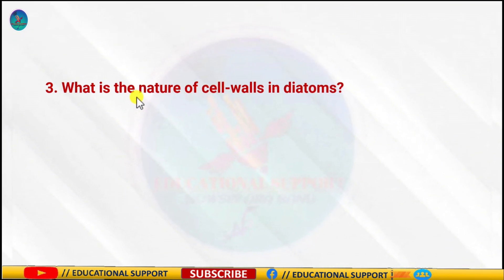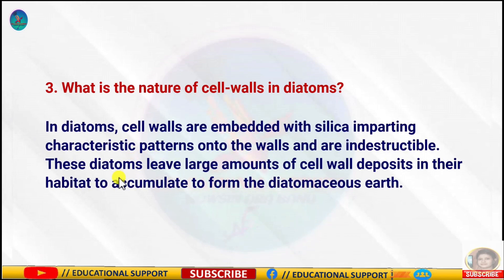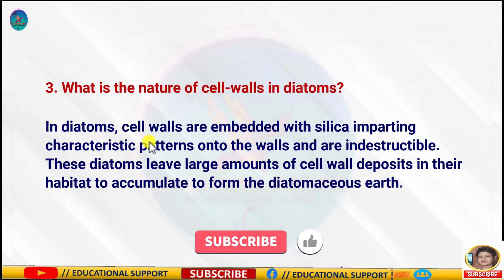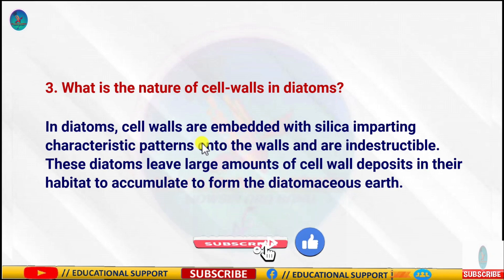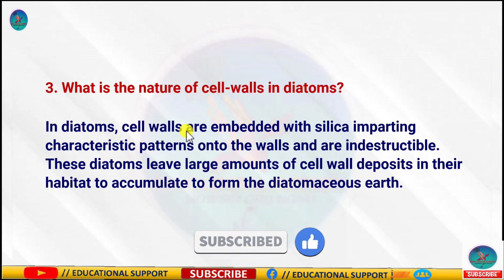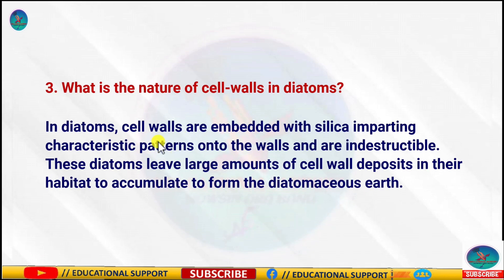Question number three: What is the nature of cell walls in diatoms? Diatoms leave large amounts of cell wall deposits in their habitat, which accumulate to form diatomaceous earth. In diatoms, cell walls are embedded with silica, which imparts distinct patterns onto the walls, and are indestructible.